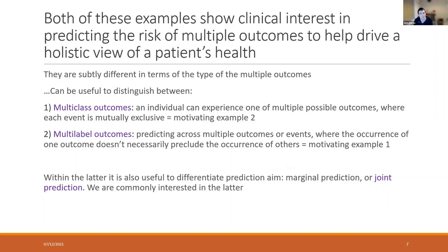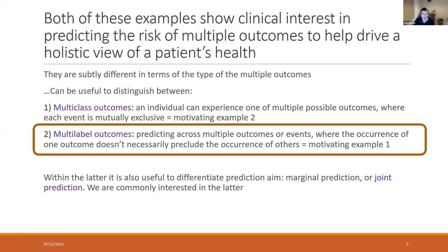Both of those examples show how there's clinical interest in predicting multiple things and how that might not marry up with how models are developed. It's also useful statistically in distinguishing between different types of multiple outcome. The first type is often called multi-class outcomes, where the individual can experience one of multiple possible mutually exclusive outcomes — akin to the cancer tumour type example. Slightly different is a multi-label outcome, where we're interested in predicting across multiple things that might happen where the occurrence of one doesn't necessarily prevent any of the others — like the atrial fibrillation example. It's this second type of outcome I'm going to be talking about today.